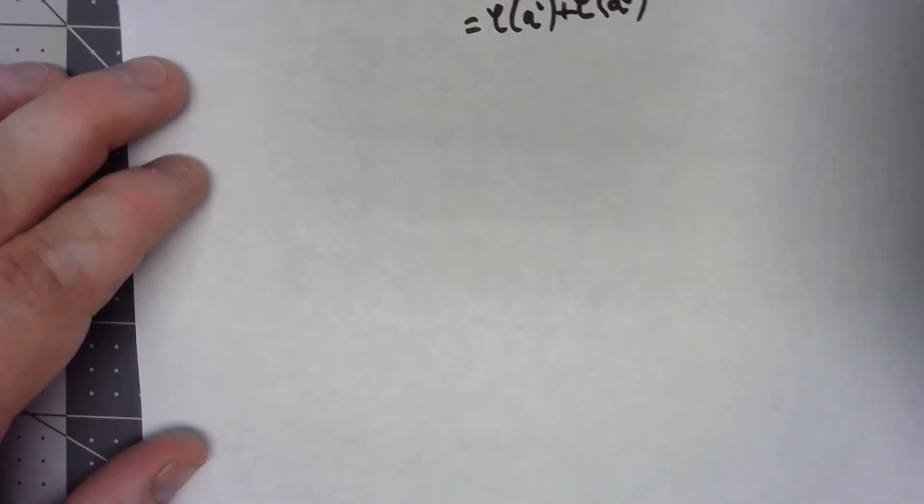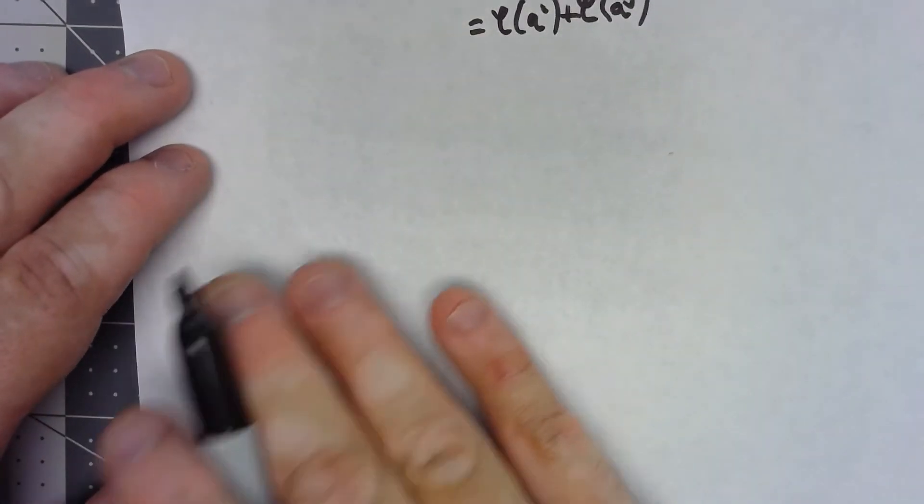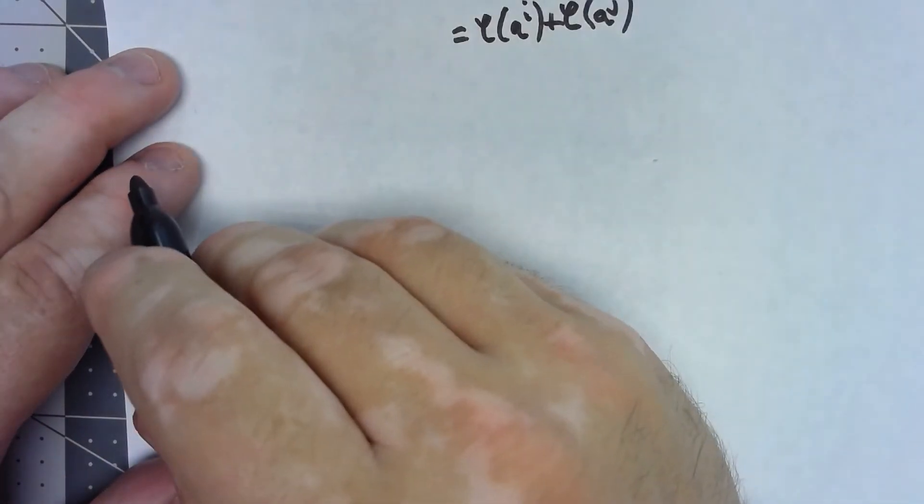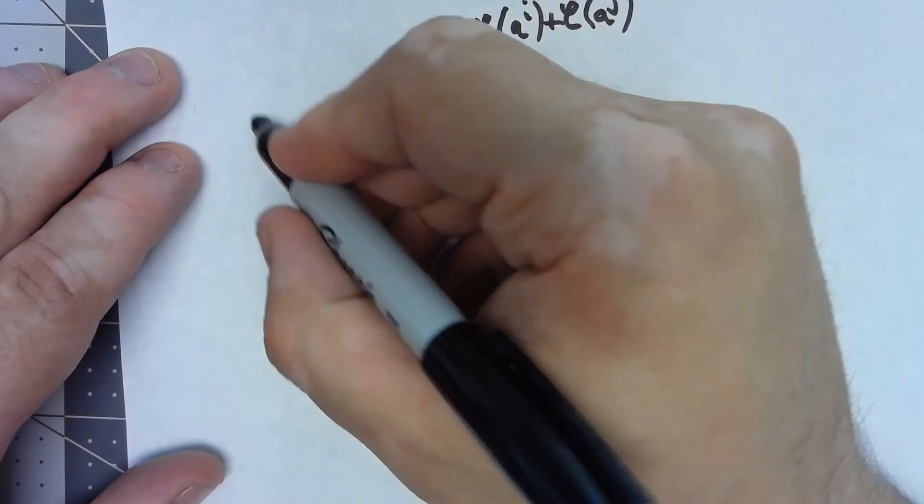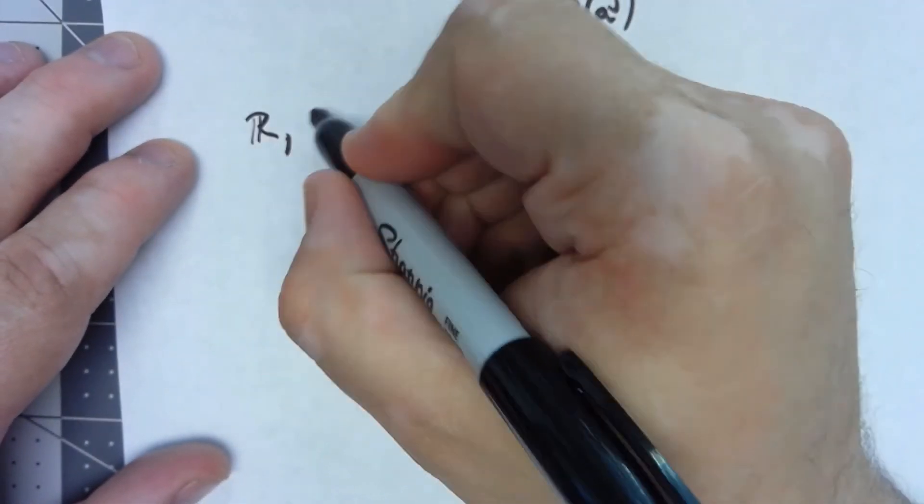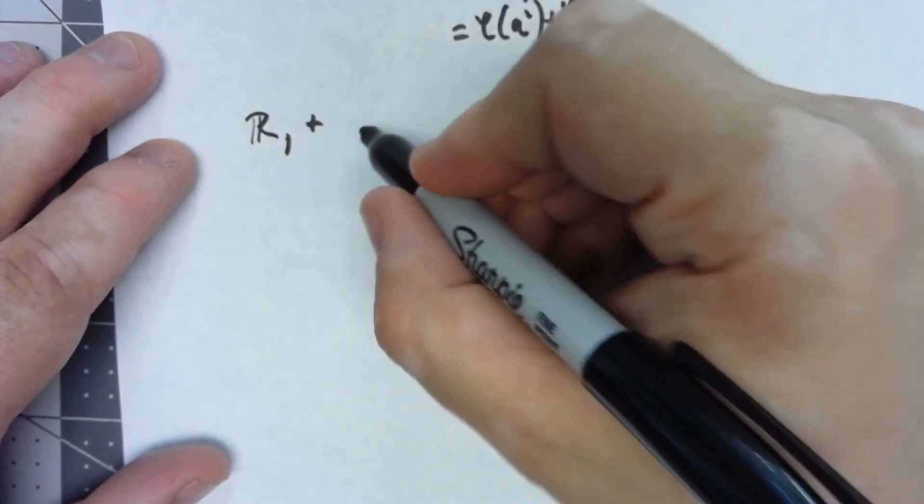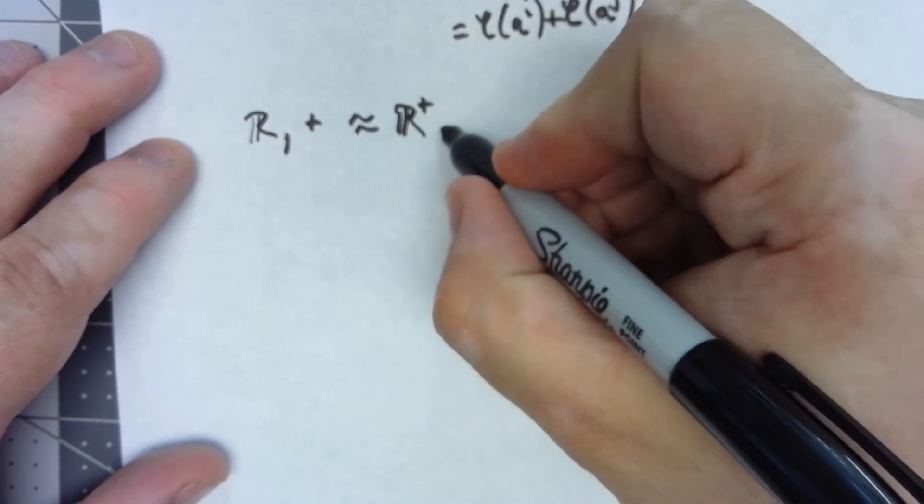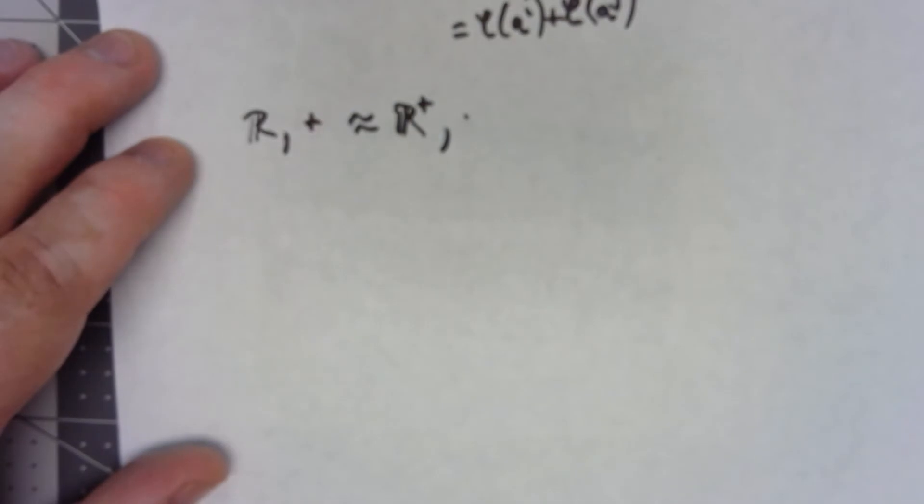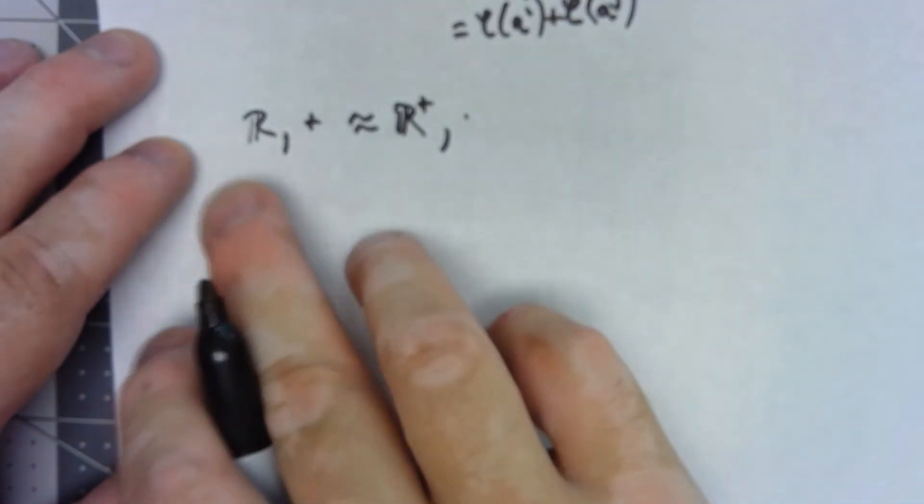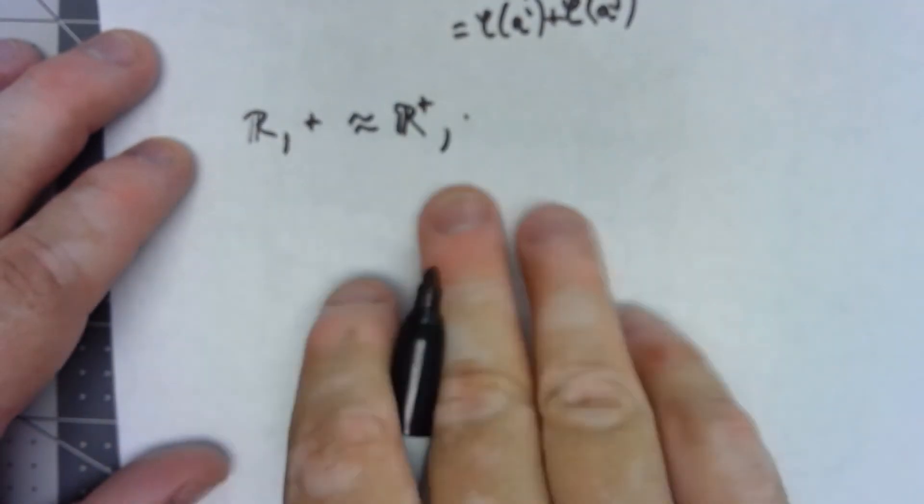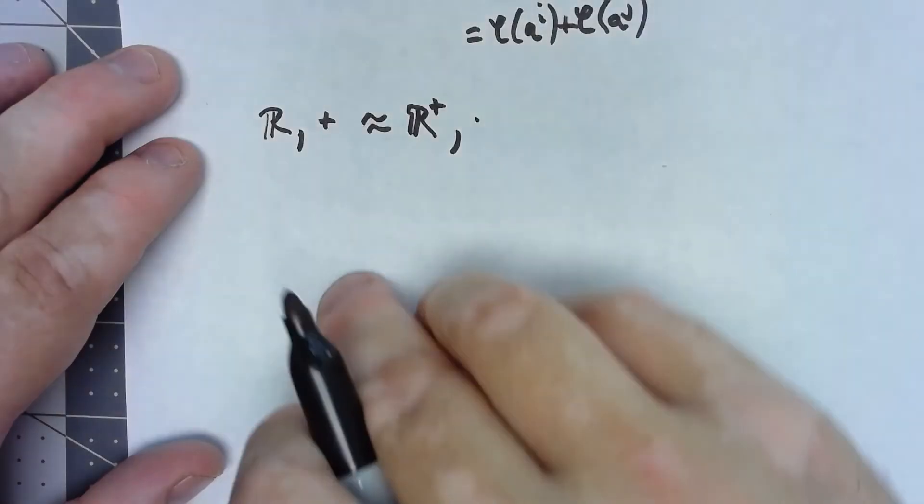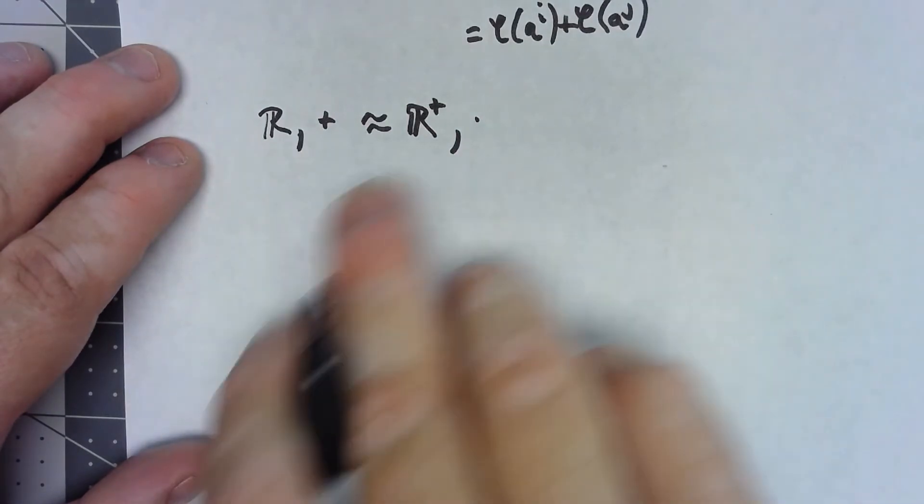I don't know how important this example is, but it's kind of clever. If I look at the real numbers under addition, I'm going to say that's isomorphic to the positive real numbers under multiplication. That seems weird because we always think of addition and multiplication as being very different operations. But it turns out that according to group isomorphisms, we can make these things isomorphic.